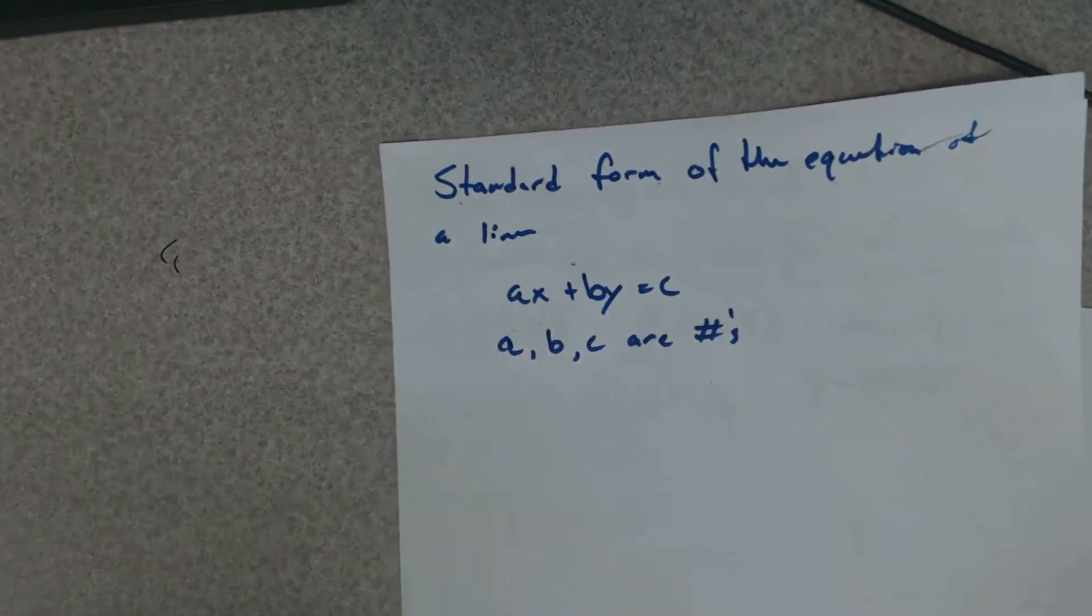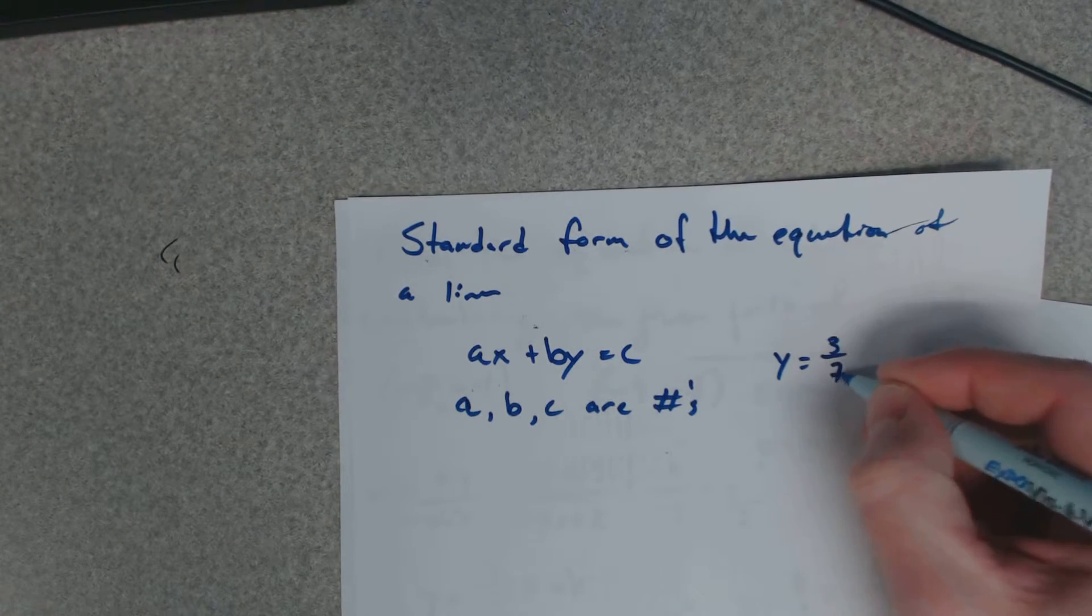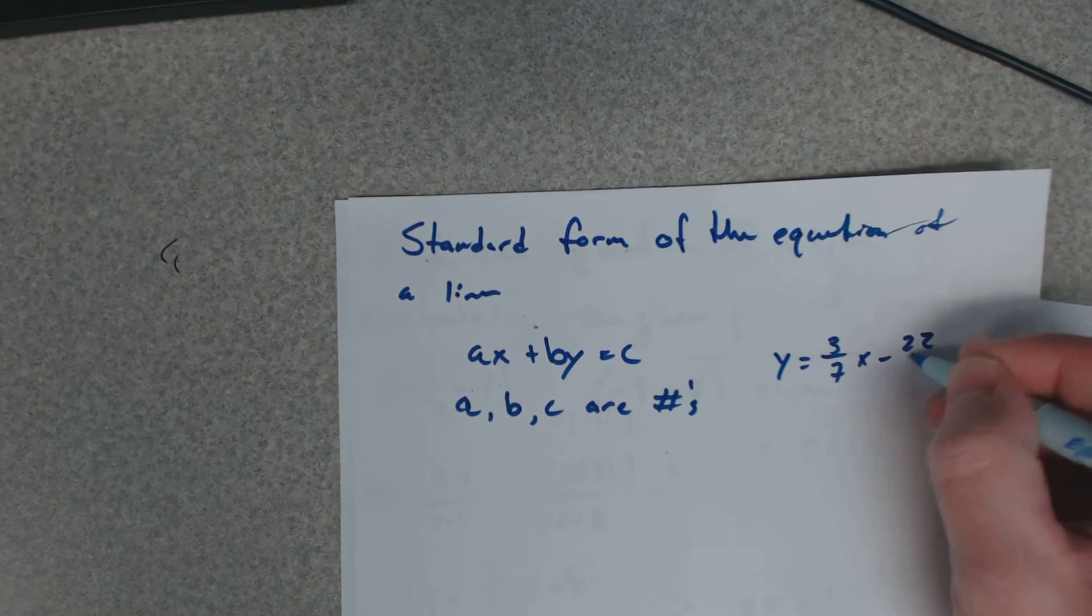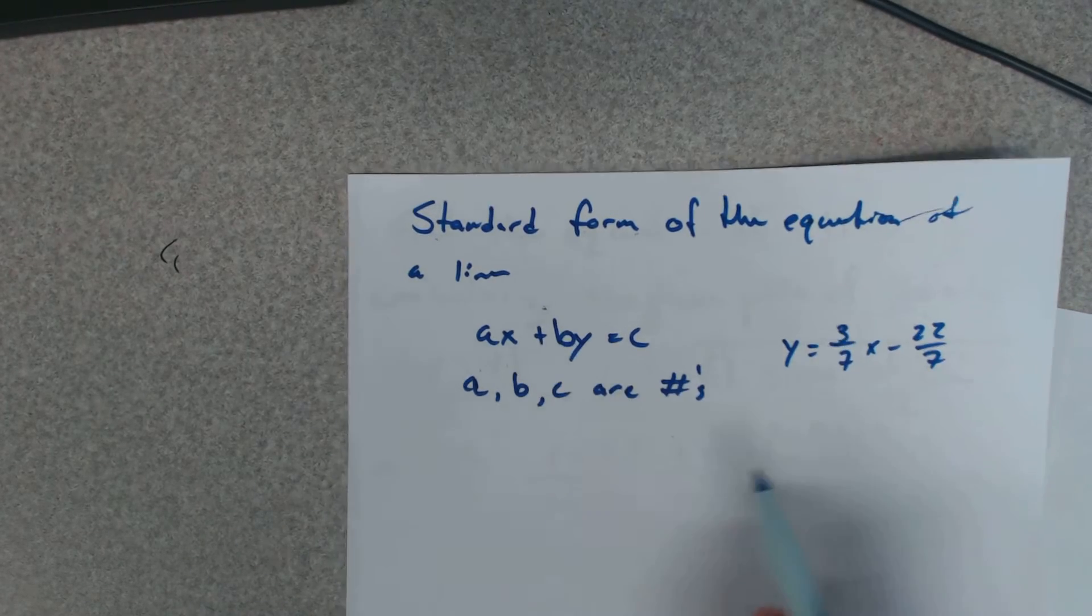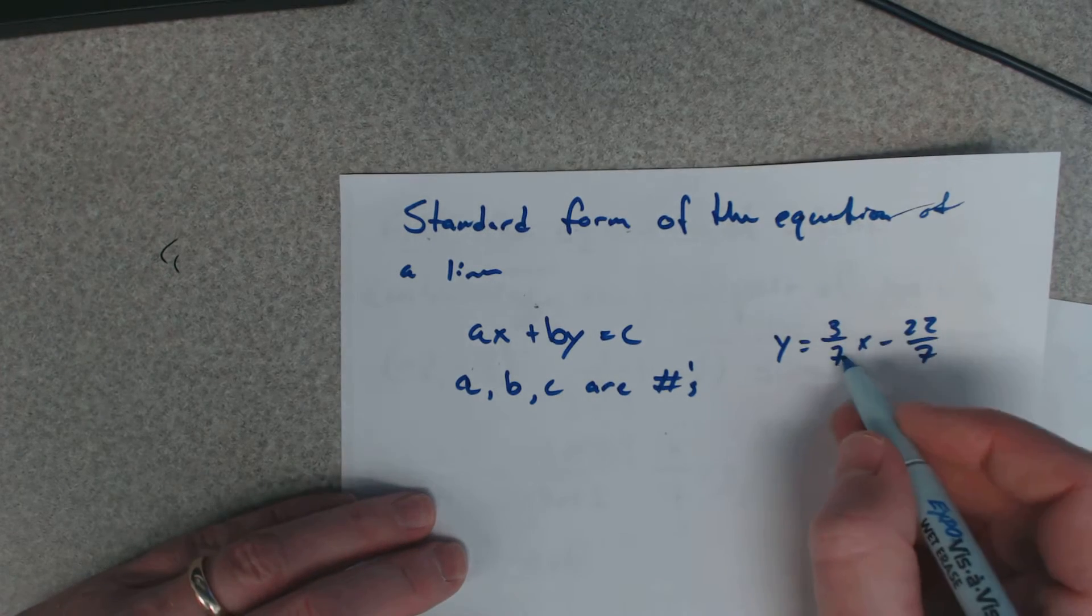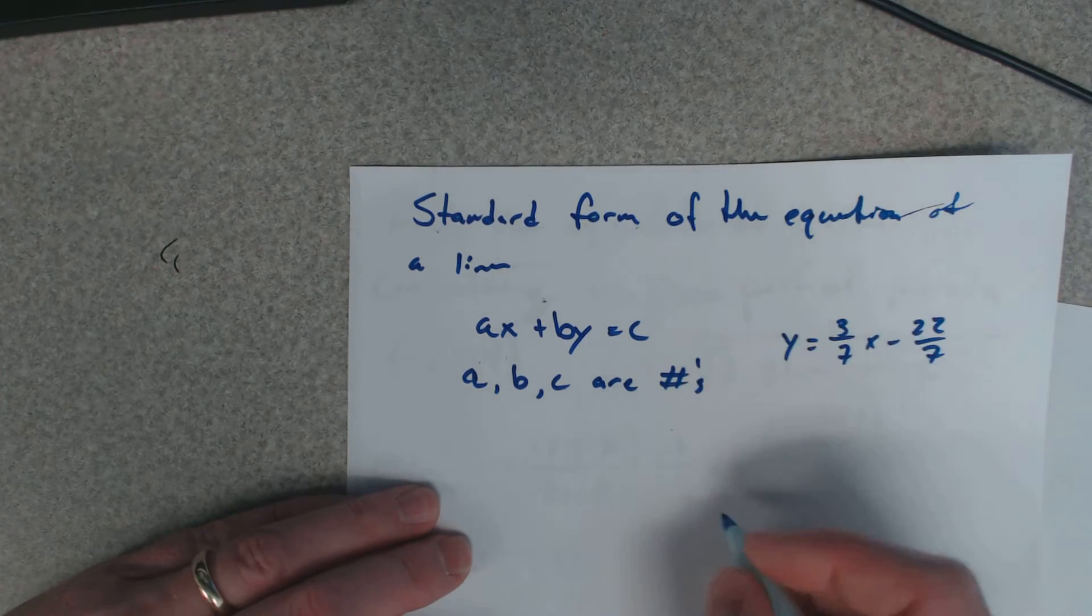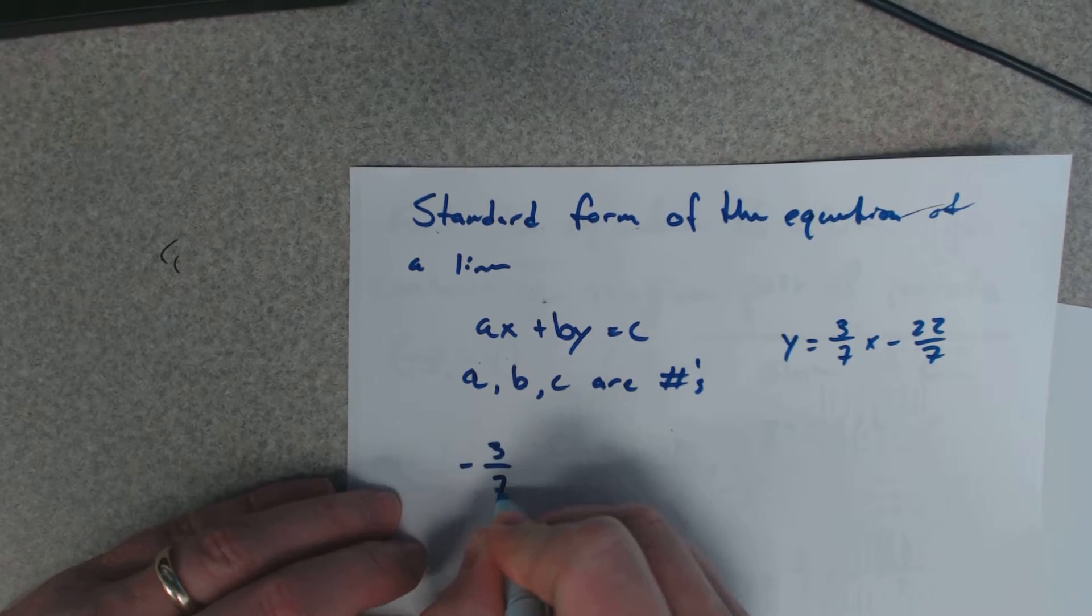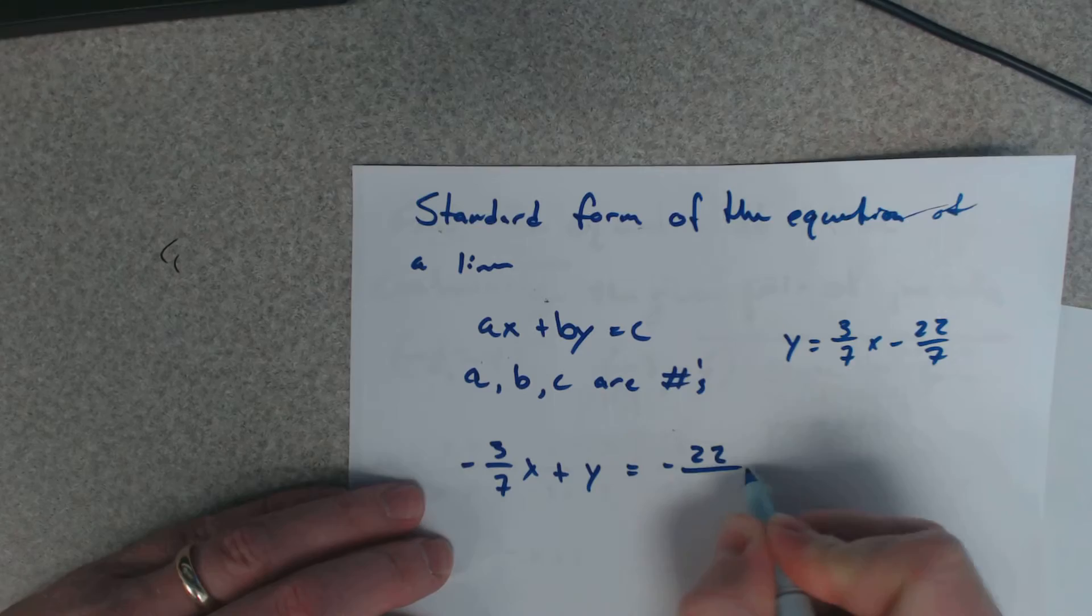So the last example is y equals 3/7x minus 22/7. You need to have both the x and y value on the same side, so we're going to take the 3/7 and subtract it away to the other side. If I subtract 3/7 on this side, I subtract it over here. So negative 3/7x plus y equals negative 22/7.